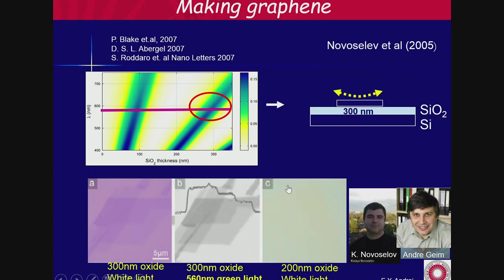With the 300 nanometer oxide, they immediately saw single monolayer, bilayer, trilayer — you can see the step in atomic force microscopy. If they had 200 nanometers of oxide and white light, they would have seen nothing. And with 300 nanometer oxide and white light it would have been much less contrast. So you see, there was really serendipity at play here.